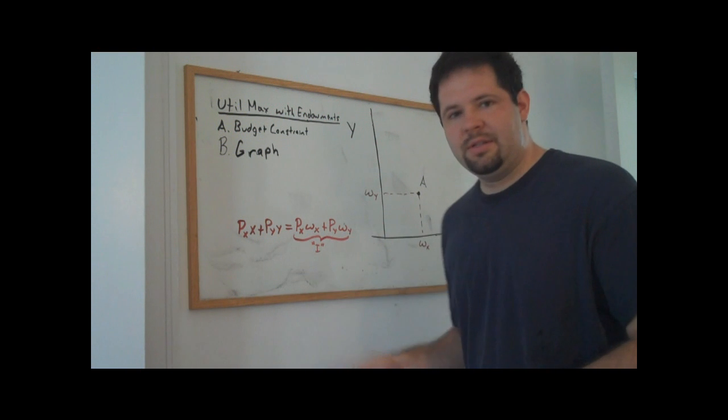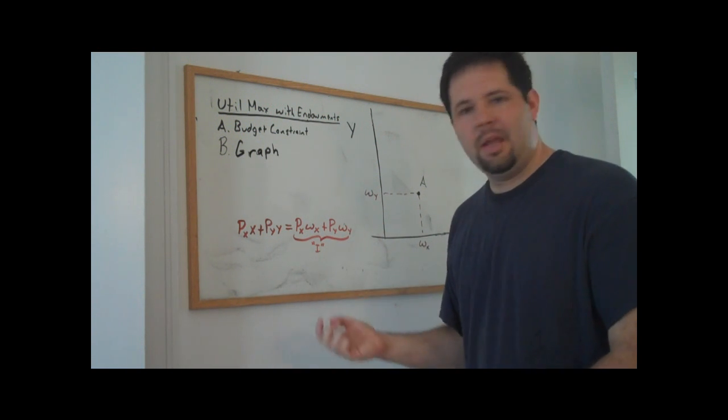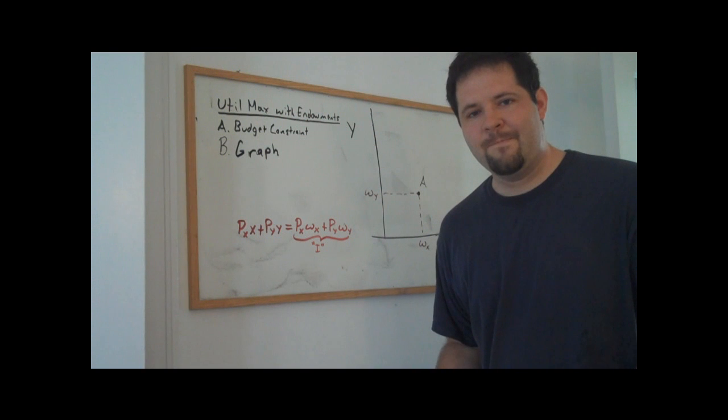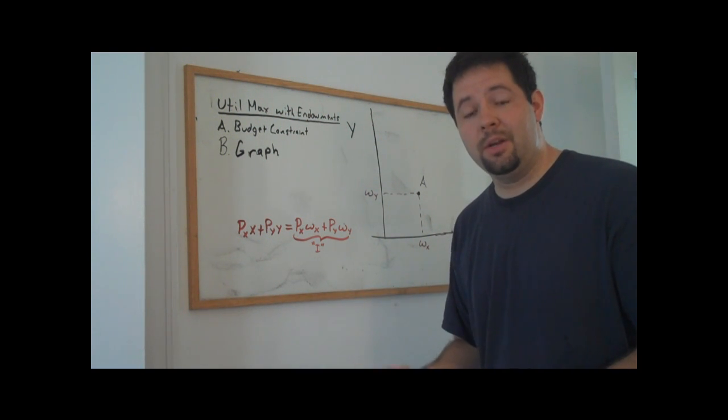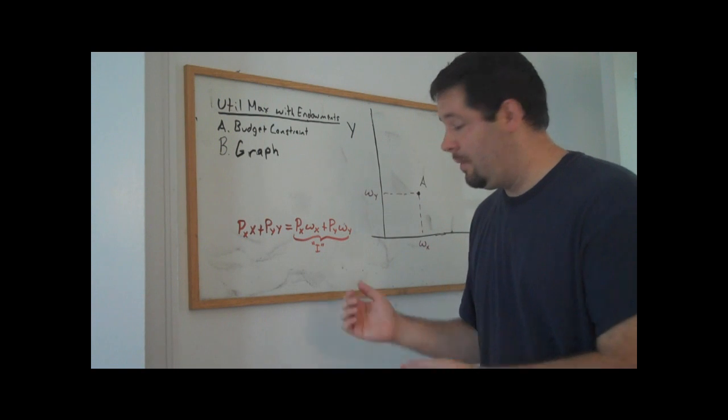And that will give us a measure of income, and then it'd just be this nominal income divided by the price. So that would be a way to figure out the intercepts, and we could get our endowment economy budget constraint from that.